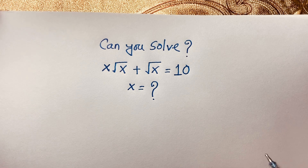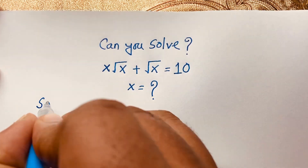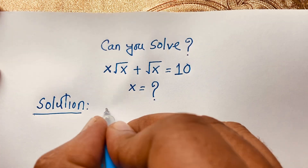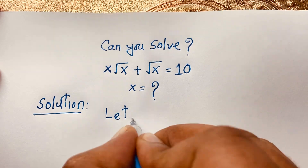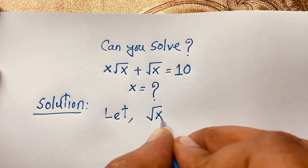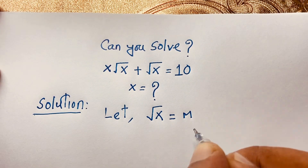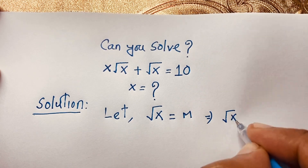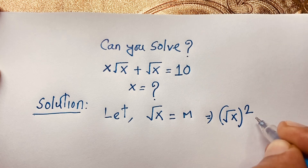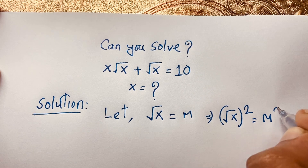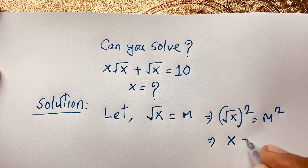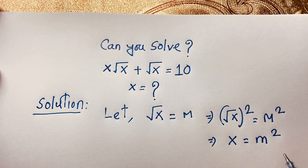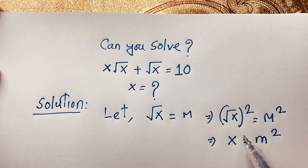So for the solution, first of all let square root of x equal to m. Then if I use both sides squared: the square root of x, whole to the power 2, is equal to m squared. The square root cancels, so x is equal to m squared. So we have square root x equals m and x equals m squared.